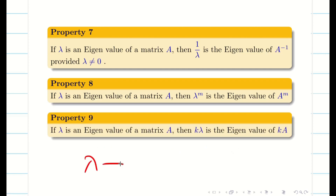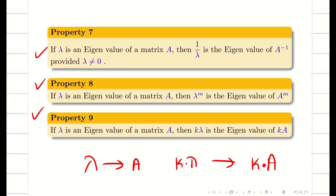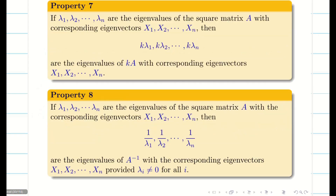Property 9: if lambda is one of the eigenvalues of A, then K times lambda is going to be the eigenvalue of the matrix K times A. To summarize properties 7, 8, and 9: if lambda 1, lambda 2, ..., lambda N are the N eigenvalues of a square matrix, then K lambda 1, K lambda 2, ..., K lambda N are the eigenvalues of KA.